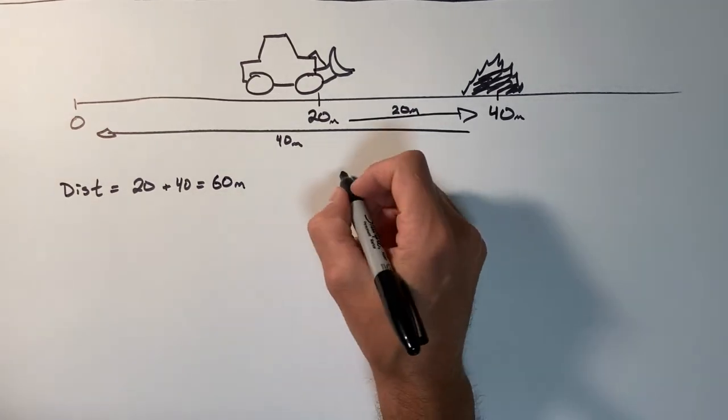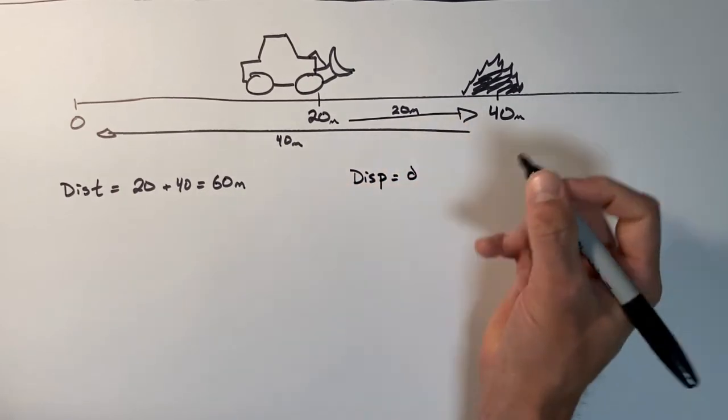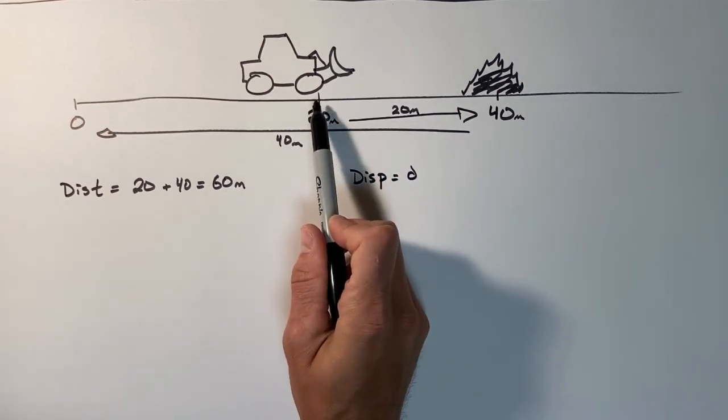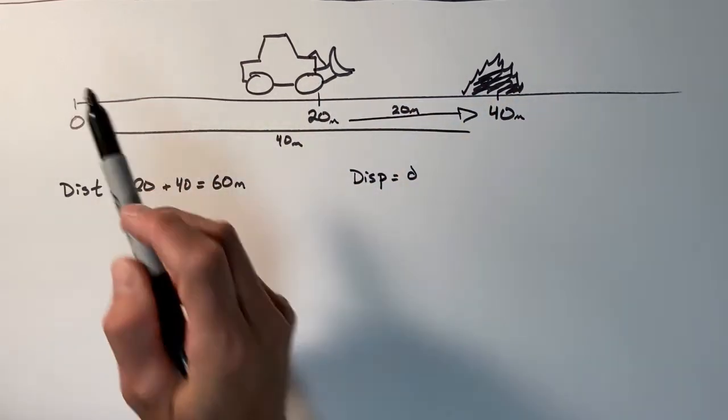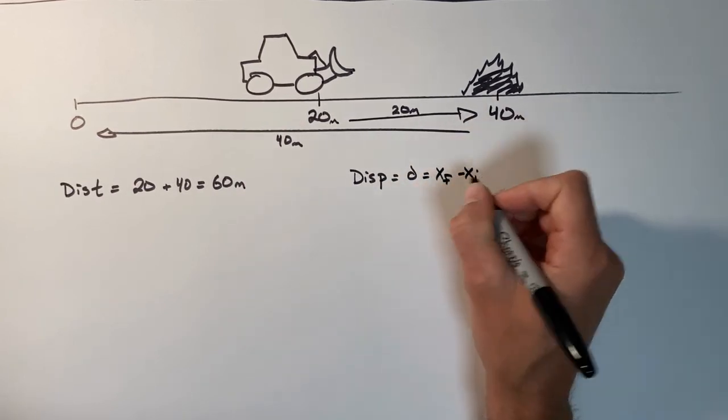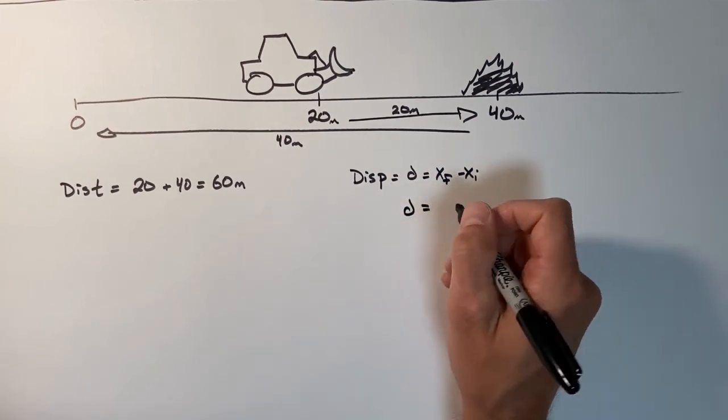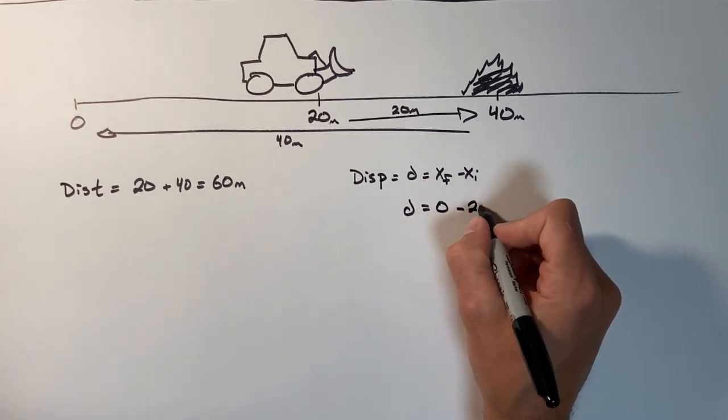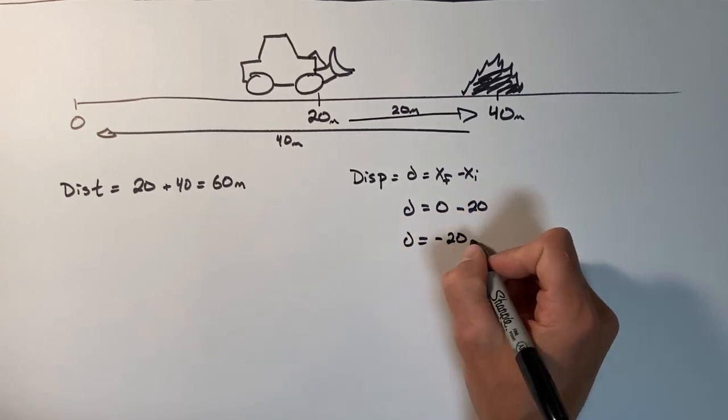Displacement, on the other hand. By now we know displacement is a change in position, so we're not concerned with where the bucket loader goes in the middle of its trip. We're concerned with where it starts and where it finishes. Using our equation for displacement, we can show the displacement is zero minus the initial, that is 20. So the displacement comes out to be a rather odd negative 20 meters.